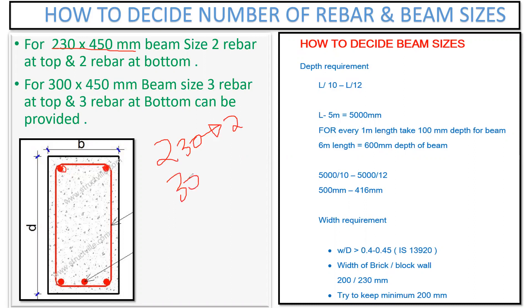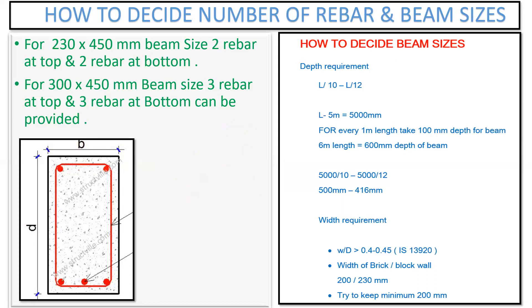But if you have a beam width of 300 mm, you can try to give three rebars. There is no hard and fast rule — instead of three you can give four also, and in 230 mm instead of two you can give three. The general practice is: minimum two rebars at the top and bottom. For a 300 by 450 mm beam, three rebars at top and three at bottom can be provided. For a 500 mm wide beam you can give five rebars — for every 100 mm of width, one rebar.